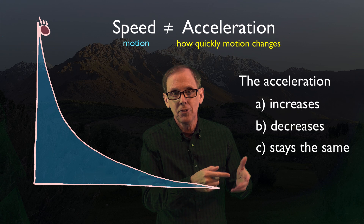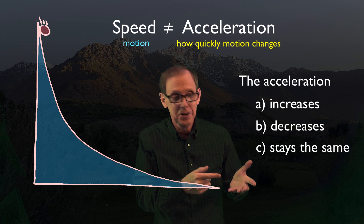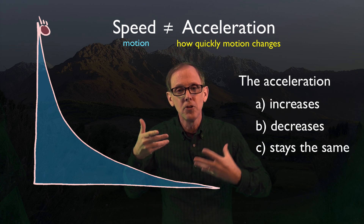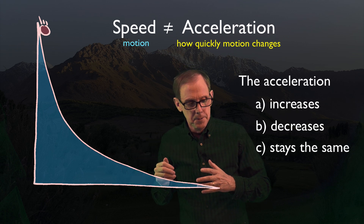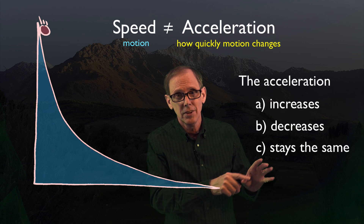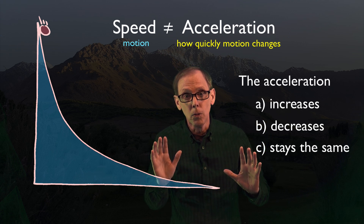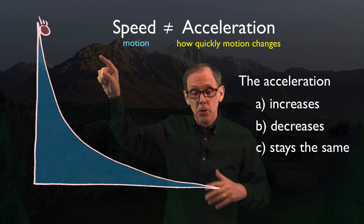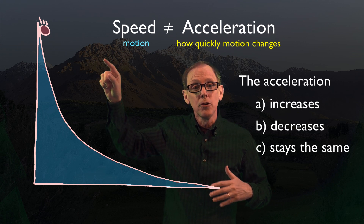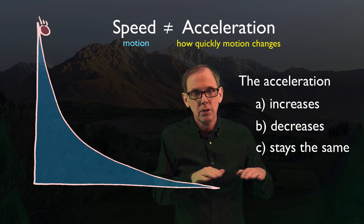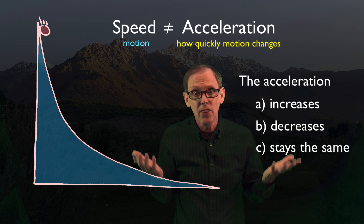It might leave the ramp at 60 miles an hour and stay at 60 miles an hour, because of Newton's first law — things in motion tend to stay in motion. So what's its acceleration down there? 60 to 60 to 60? Acceleration is zero. So we see at the top of the ramp where it's steep, the acceleration is great; down at the bottom where it's level, the acceleration is nothing.